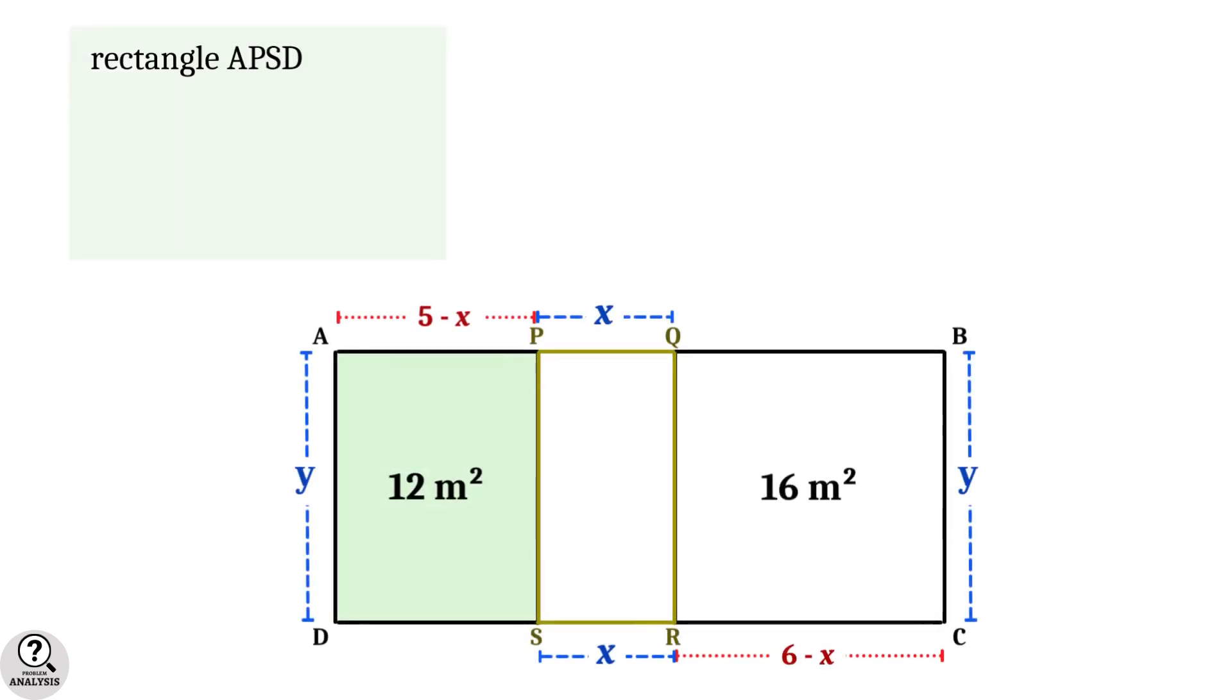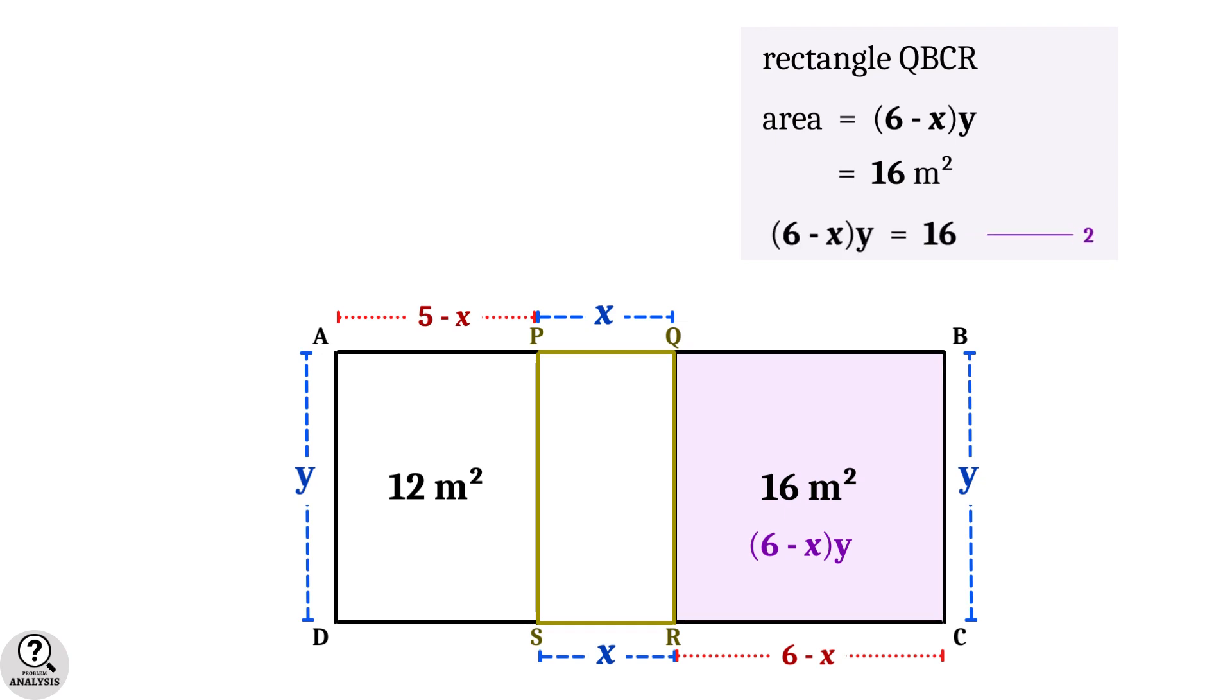First I am taking the rectangle APSD. Clearly the area will be (5 minus x) into y which is equal to 12 meters square. Put this as equation 1. Similarly for the second rectangle QBCR, the area will be (6 minus x) into y which is equal to 16 meters square. Put this as equation 2.